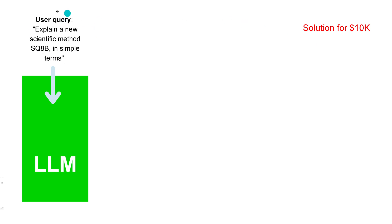So you have a user query and you say to GPT-4, to ChatGPT, your LLM on your local machine: 'Explain a new scientific method like SQ8B in simple terms.' Now, the LLM — the large language model — might not have been pre-trained or fine-tuned on this new scientific method because it was published after the LLM went public itself. So what do we do?